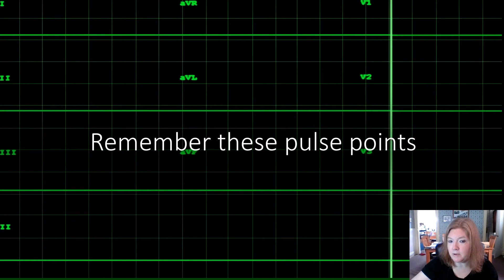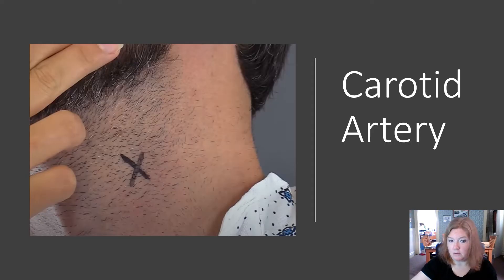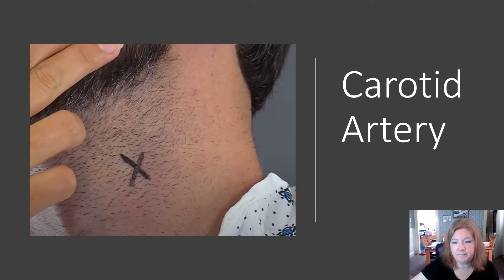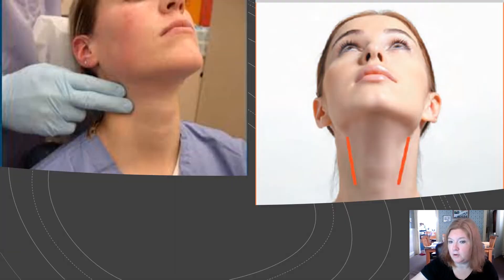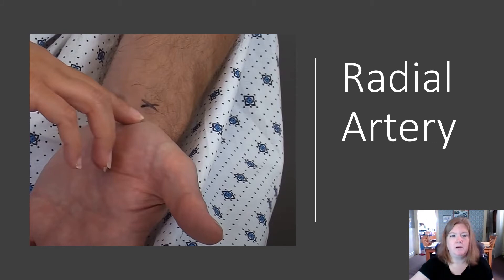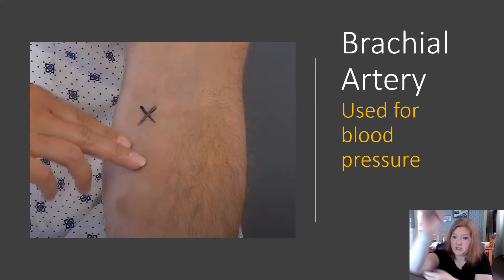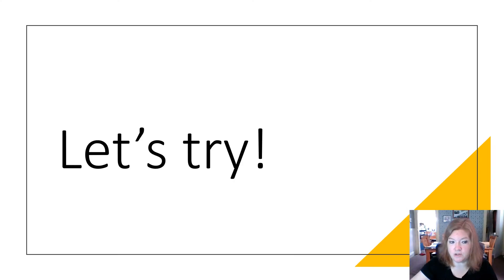Remember these pulse points: the carotid artery, felt in the neck; the radial artery on the thumb side of the wrist — flex your wrist slightly to feel it better; and the brachial artery, which is the one used to measure blood pressure.